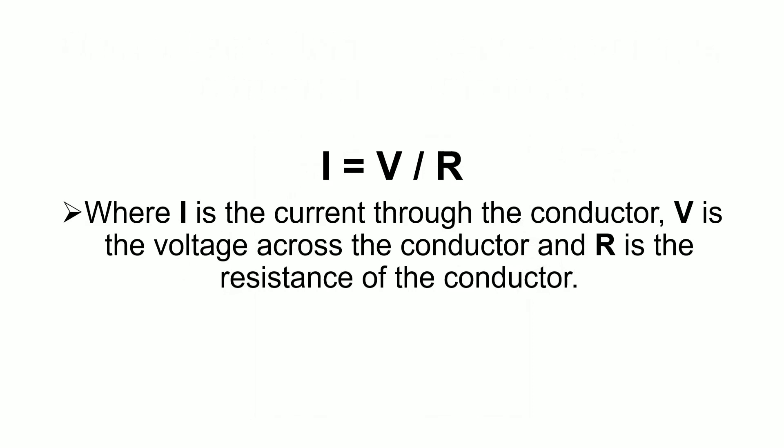Where I is the current through the conductor, V is the voltage across the conductor, and R is the resistance of the conductor.